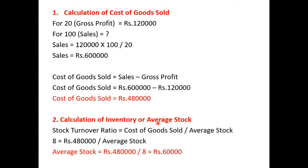Next, calculation of inventory or average stock. Stock turnover ratio, that is inventory turnover ratio, is given as 8 times. The formula is cost of goods sold divided by average stock. So, 8 = 4,80,000 ÷ average stock. Simplifying, average stock is Rs. 60,000.